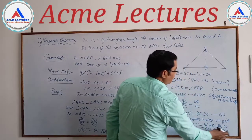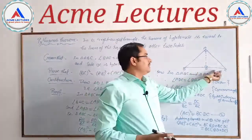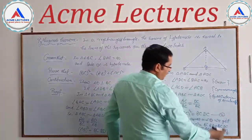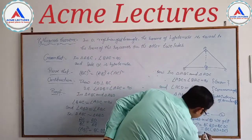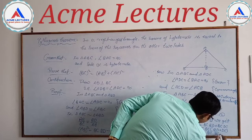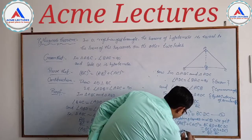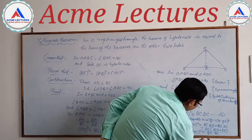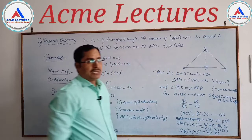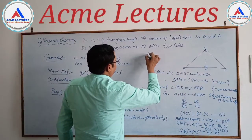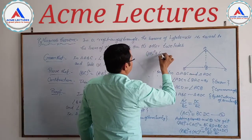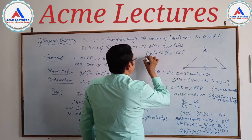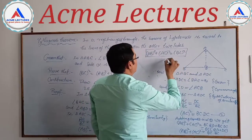Now BD + DC equals BC, since D lies on BC. So substituting, we get BC × BC, which is BC². Therefore AB² + AC² = BC², which is what we had to prove. This is Pythagoras theorem — proved.